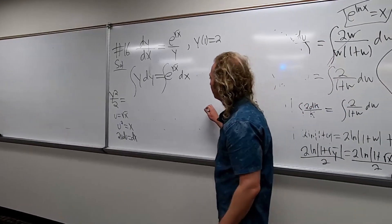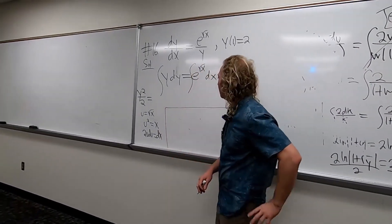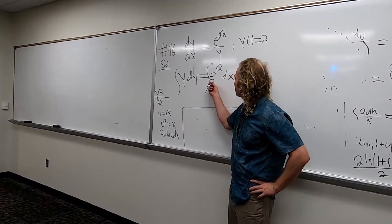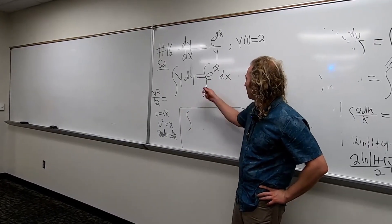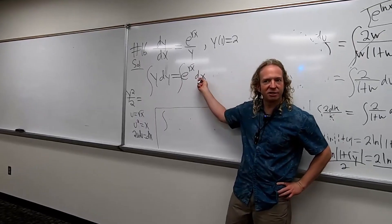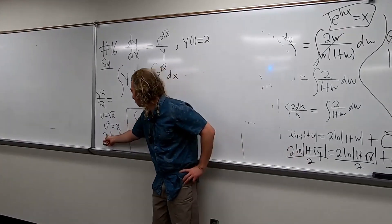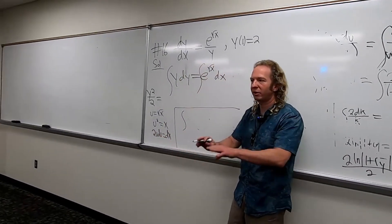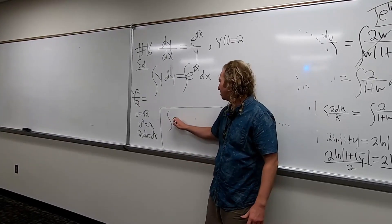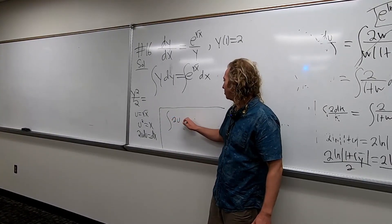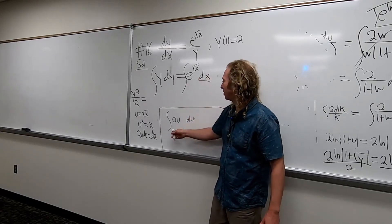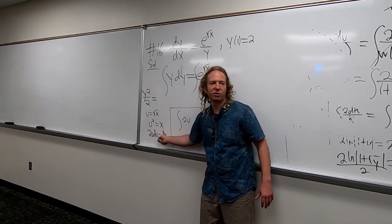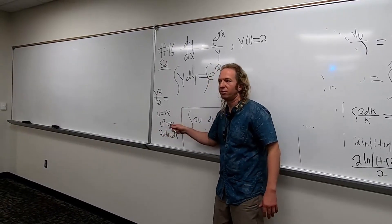Something interesting is going to happen in this problem. Take the derivative. So we get 2u du equals dx. So now what happens here, let's just focus on this one, dx is 2u du. I'm not going to pull the 2 out. I'm going to leave it in on purpose just because I think it might be easier.